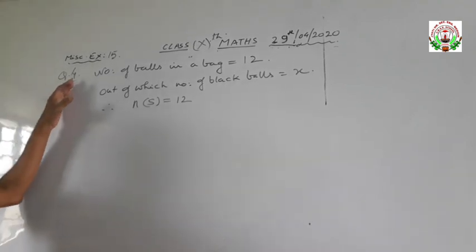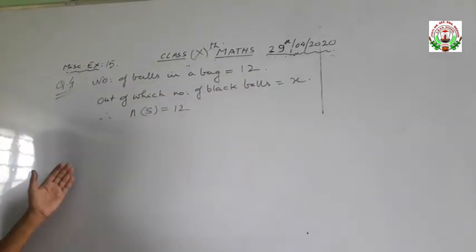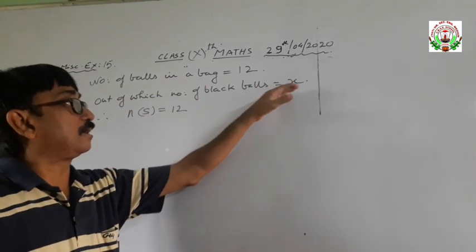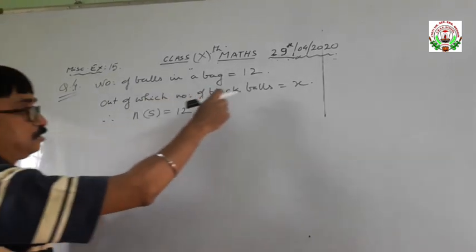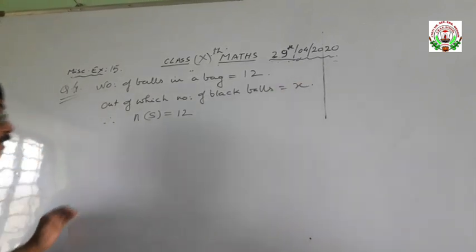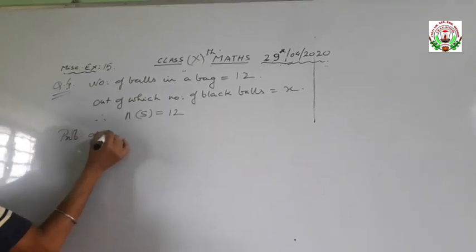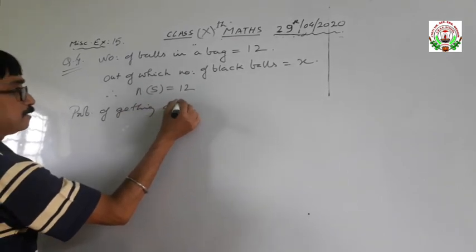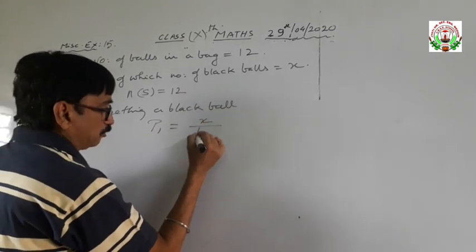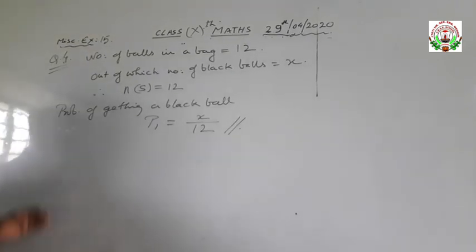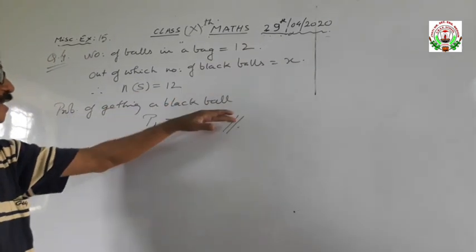Now question number 4. It is given that in a bag the total number of balls is 12, out of which X balls are black. So total N of S is 12. The probability of getting a black ball, P1, equals X upon 12.